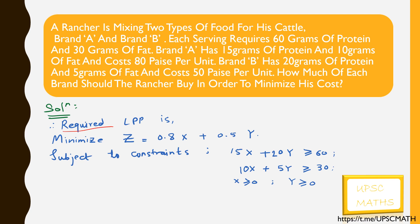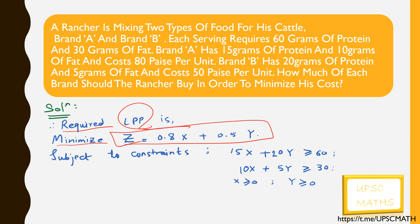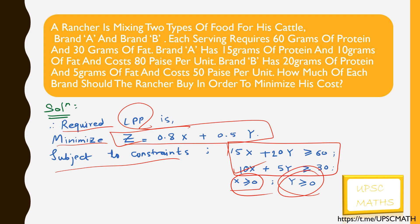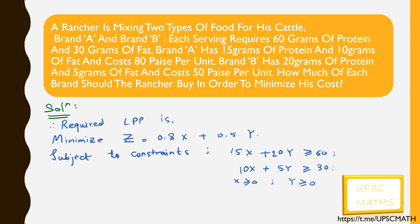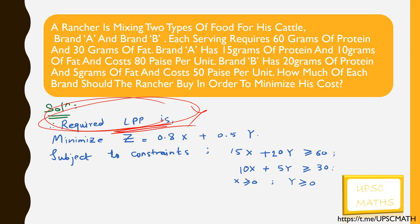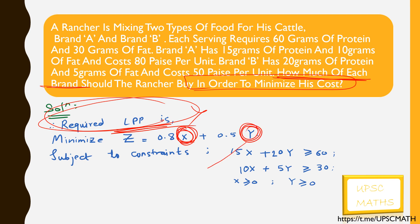Hence the required linear programming problem is: minimize z = 0.8x + 0.5y, subject to constraints 15x + 20y ≥ 60 and 10x + 5y ≥ 30, where x ≥ 0 and y ≥ 0. Since the question asks not just to formulate but also to calculate how much of each brand to buy to minimize cost, we need to find the values of x and y at z minimum.